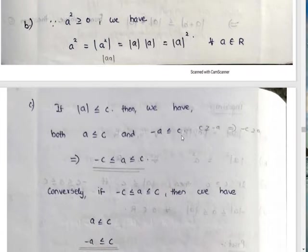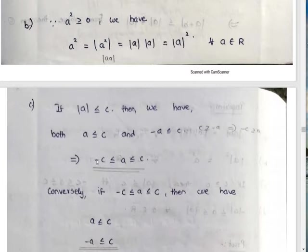If A is positive then A less than C, and minus A less than C, so minus C less than A less than C. The converse follows similarly.